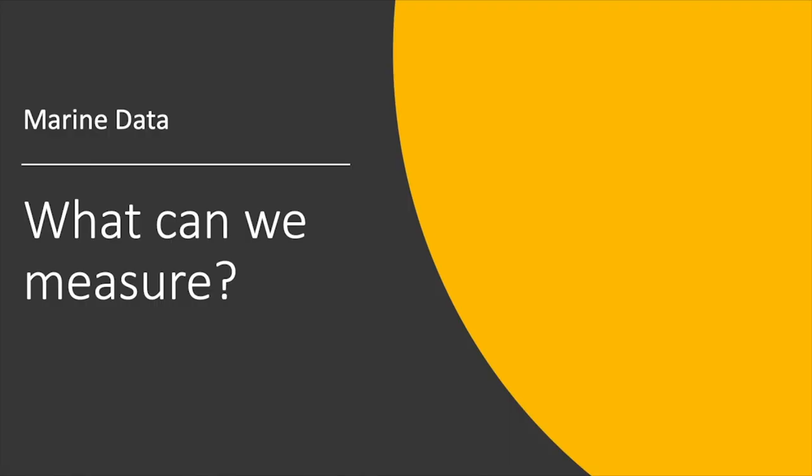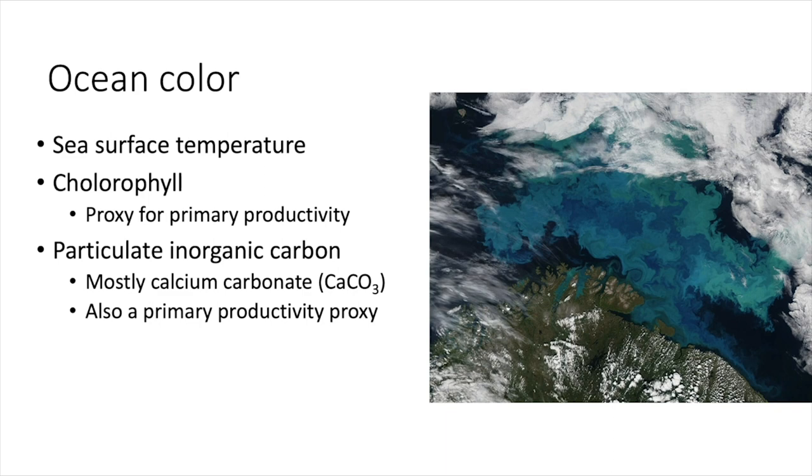So, what can we measure in the ocean? There are a variety of different variables, so we'll start with ocean color. So basically, what color is the ocean? This can tell us something about sea surface temperature, how much radiation is coming off of the ocean. Chlorophyll, if you look at the greenness of the ocean, you can see this as a proxy for primary productivity. You can also look at particulate organic carbon, which is mostly calcium carbonate, which is also a primary productivity proxy. So if chlorophyll is green, particulate inorganic carbon is actually white. So if you have a very light colored ocean, it may indicate that you have a lot of that calcium carbonate.